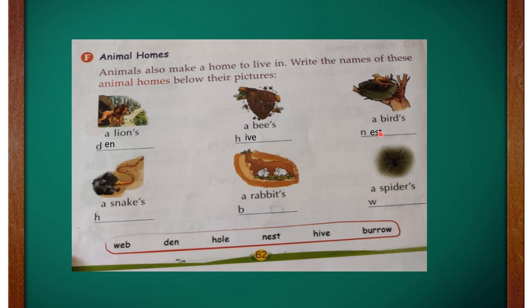The next one is a snake — oh my, the snake's home is called a hole, H-O-L-E. Now, notice one thing: H-O-L-E 'hole' is a round opening deep in the ground, while W-H-O-L-E 'whole' means a complete one. That is a kind of homophone — two words that sound the same but have different meanings and spellings.